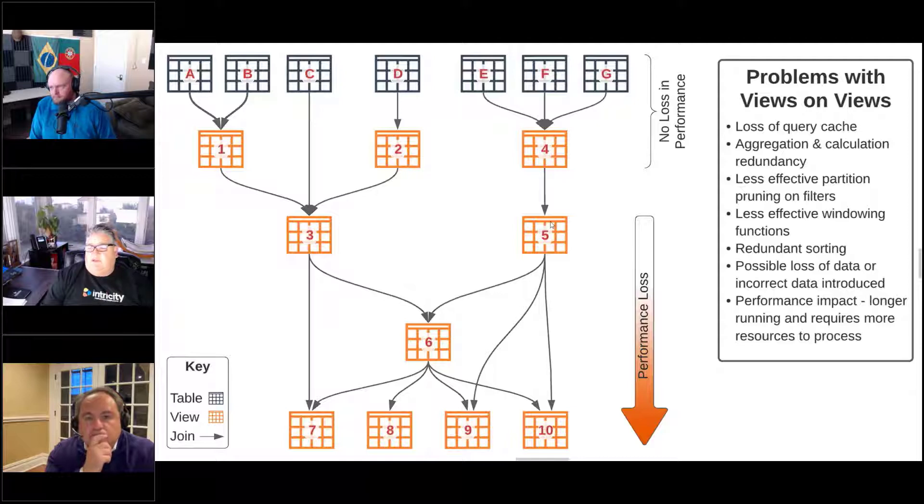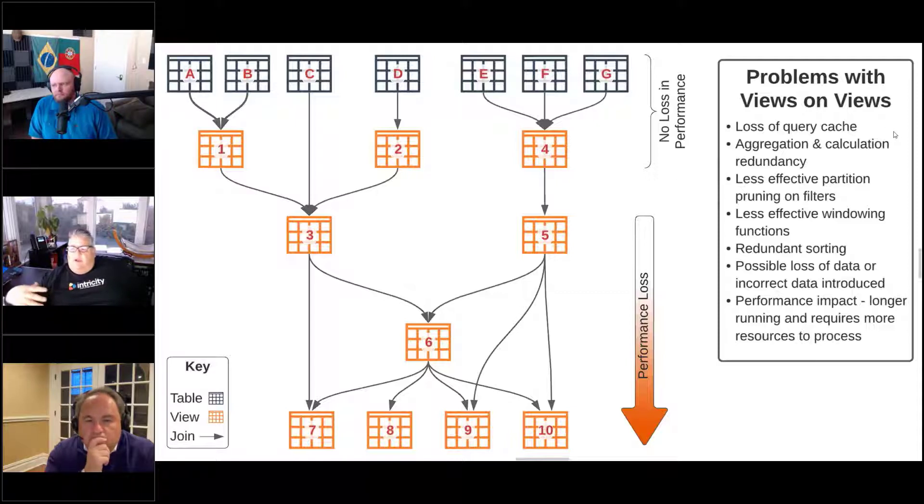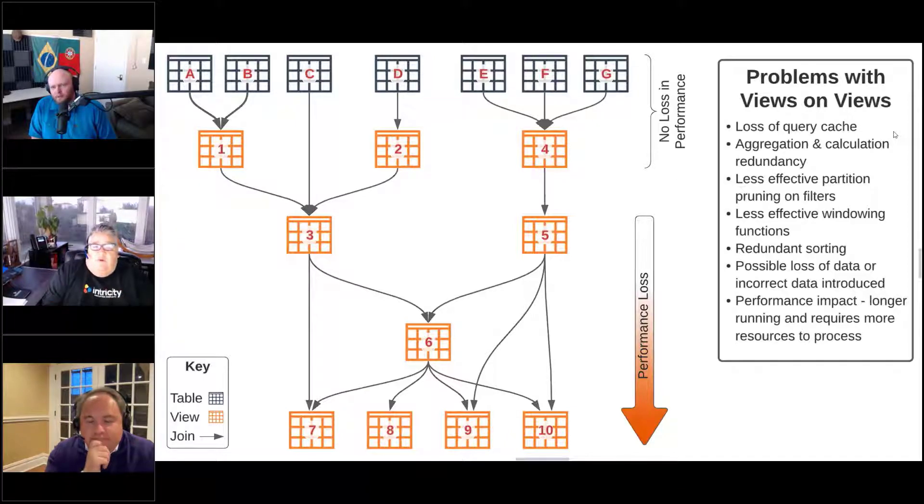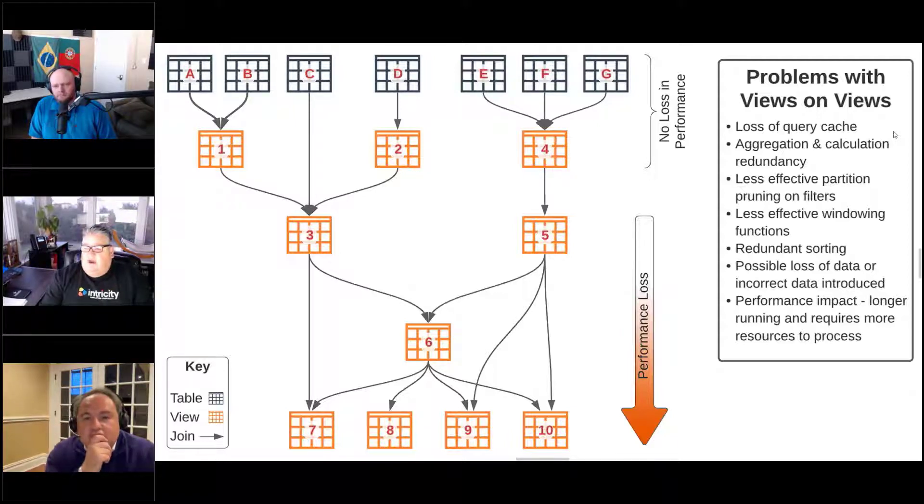One of those is the loss of query cache. What happens in Snowflake - we've got query cache, for those of you that have been working on Snowflake, it's a beautiful thing. We run a query, the result set for that query is cached for 24 hours, and so if the query doesn't change or the underlying data doesn't change and you go and run that same query over again...